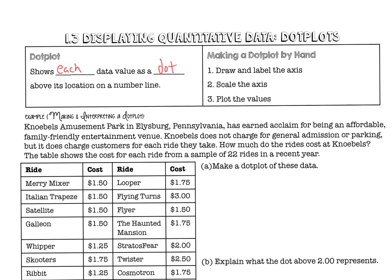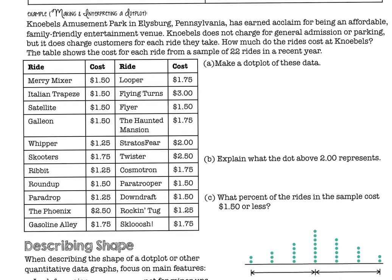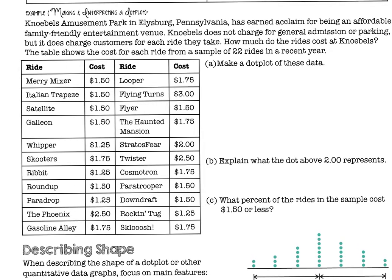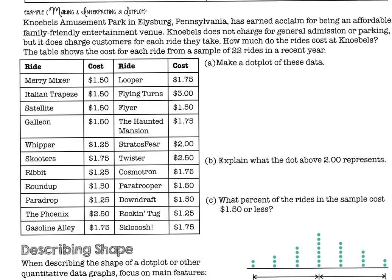The way you draw it is you're going to draw and label the axis, so you'll have one axis here. You'll scale the axis appropriately, and then plot your values. We're looking at an amusement park and the cost that each ride has. They get charged for every ride, so no admission, no parking. We want to make a dot plot of each cost, and there's 22 samples. If you look, the lowest price we have is $1.25, and the highest price is $3.